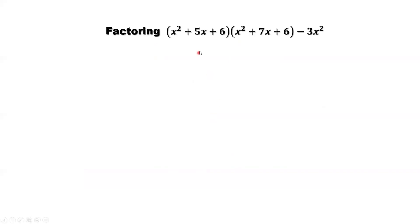Now look at the product of the first part. What's the difference in between the first one and the second one? The only difference is the midterm, 5x and 7x.